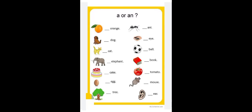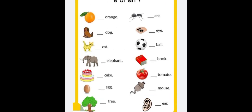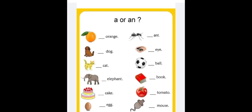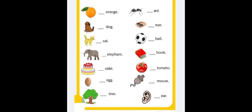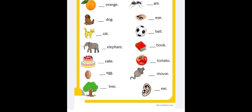Article A or AN. An orange, an ant, a dog, an eye, a cake, a ball, an elephant, a book, a tomato.